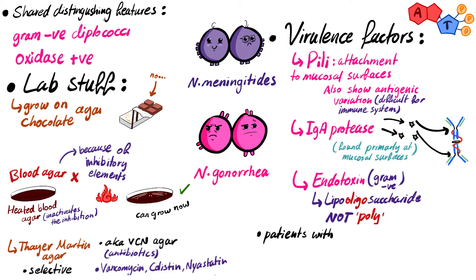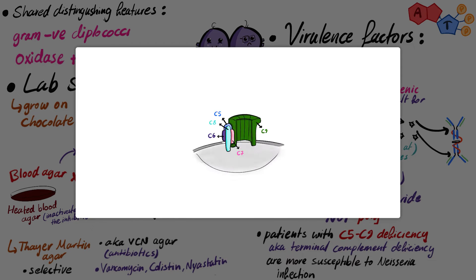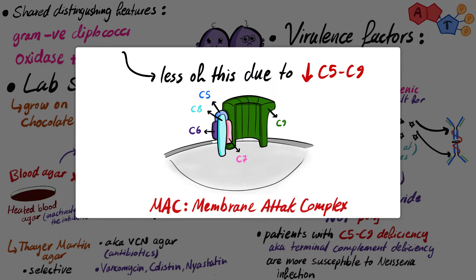Lastly, you need to know that patients with C5 to C9 deficiency — also known as terminal complement deficiency — are more susceptible to Neisseria infection. These particular complement proteins are essential to form the MAC, or membrane attack complex, which is used to cause bacterial lysis. When these proteins are deficient, the MAC won't be produced sufficiently, making patients more prone to Neisseria infections.